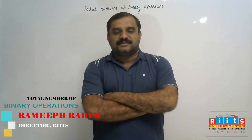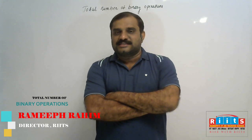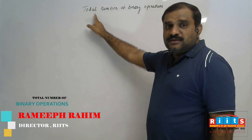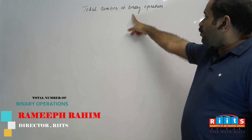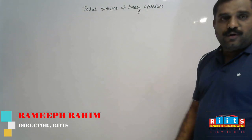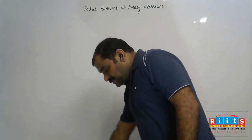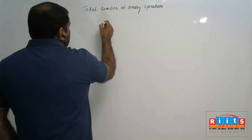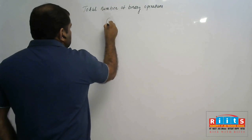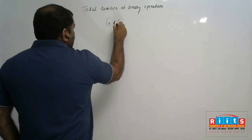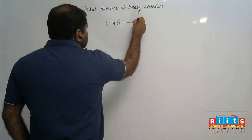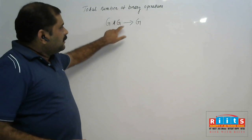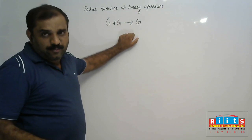Today we discuss an important topic related to NCERT: the total number of binary operations. What do you mean by binary operation? Binary operation means if G star G maps to G itself — where G is a non-empty given set — then G star G mapping to G itself is called a binary operation.